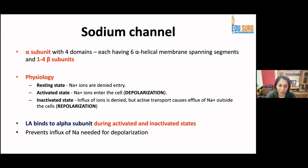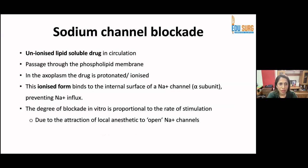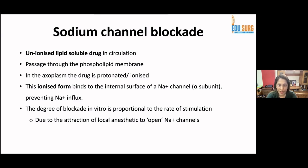The local anesthetic binds to the alpha subunit during activated and inactivated states, preventing the influx of sodium needed for depolarization — this is how local anesthetics stop nerve conduction. The unionized, lipid-soluble drug circulates and passes through the phospholipid membrane. In the axoplasm, the drug is protonated (ionized), and it is this ionized form which binds to the internal surface of the sodium channel alpha subunit, preventing sodium influx. The degree of blockade in vitro is proportional to the rate of stimulation, due to the attraction of local anesthetic to open sodium channels.